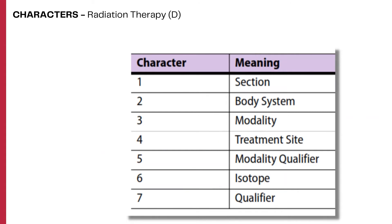Radiation therapy procedures have a first character value of D. The second character specifies the body system that is irradiated, such as the central nervous system or the musculoskeletal system. The third character specifies the general modality used, such as beam radiation. The fourth character specifies the treatment site. The fifth character further specifies the radiation modality, such as photon beam or electron beam. The sixth character specifies the type of isotope introduced into the body. The seventh character may specify whether the procedure was performed intraoperatively or as a separate procedure.